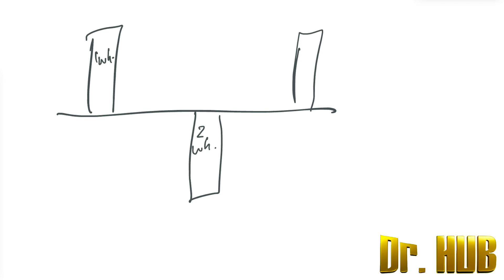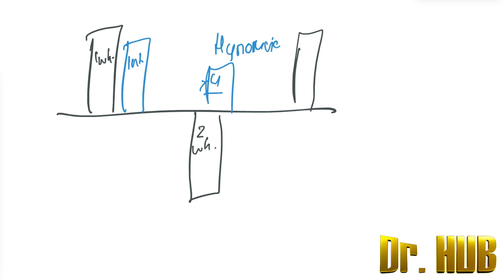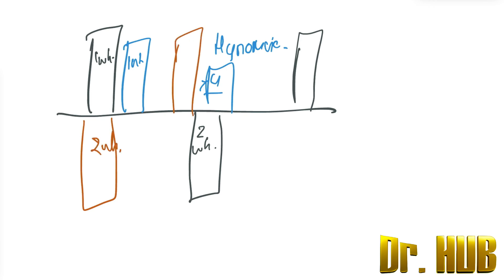Another variety includes multiple episodes: a manic episode lasting one week or more, followed by a hypomanic episode lasting four days or more. Yet another variety includes an episode of depression lasting two weeks or more, followed by an episode of mania lasting one week, and then a hypomanic episode lasting four days or more.